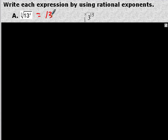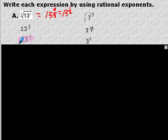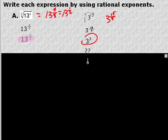Write each expression using rational exponents — going the other way. The numerator is the power or exponent, and the radical index is the denominator. For the 8th root of 13 to the 4th: the exponent is 4, the index is 8, giving 4/8 which simplifies to 1/2. So it's 13 to the 1/2 power. For the next one, the exponent 3 goes on top and the radical index is the denominator, giving 3 to the 3/3, and then 3 cubed is 27.